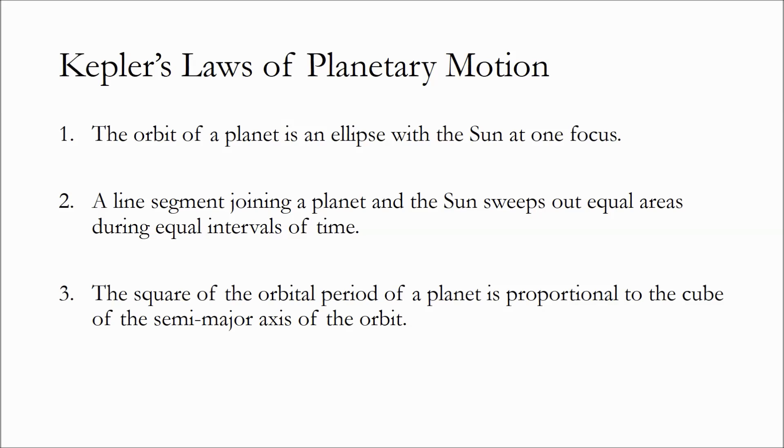Now, one big thing to recognize about these laws is that although they were written for the case of planets orbiting the sun, they also apply to objects in orbit about planets and moons. We'll dig into how to verify these laws in a moment, but first let's talk a little about the geometry of ellipses.